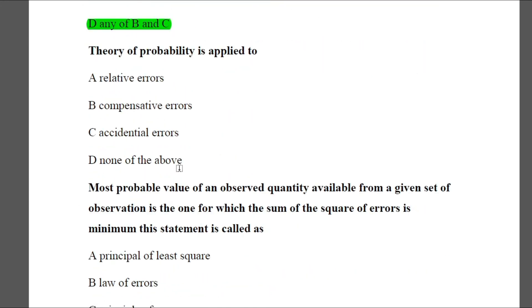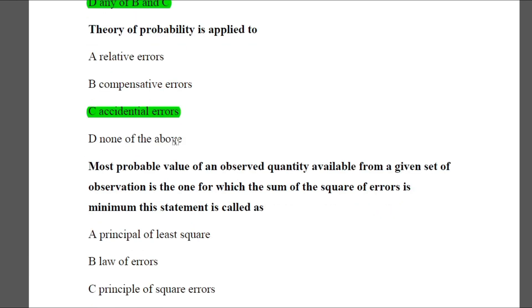Question 19: The theory of probability is applied to — Option A: relative errors, Option B: compensative errors, Option C: accidental errors, Option D: none of the above. The answer is C — accidental errors.